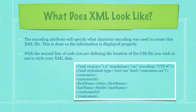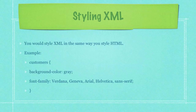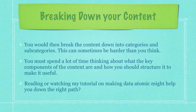This is concerning whether all of the content is included in the XML file. The encoding attribute will specify what character encoding was used to create this XML file. This is done so the information is displayed properly. With the second line of code, you are defining the location of the CSS file you wish to use to style your XML data. You would style XML in the same way you style HTML with a cascading style sheet declaration, as you can see here. You would then break the content down into categories and subcategories. You must spend a lot of time thinking about what the key components of the content are and how you should structure it to make it useful. Reading or watching my tutorial on making data atomic might help you down the right path. I have included a link here to that.